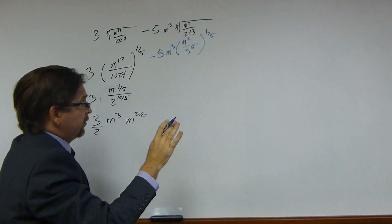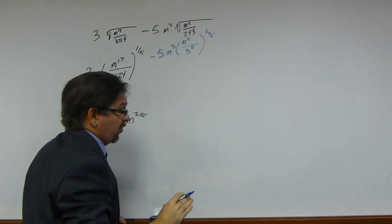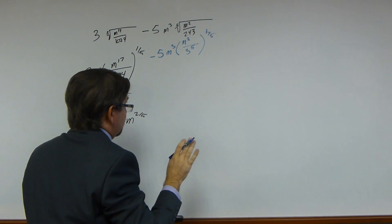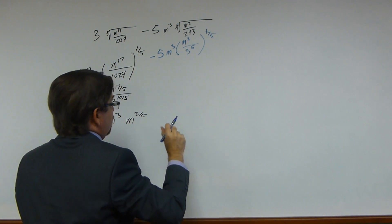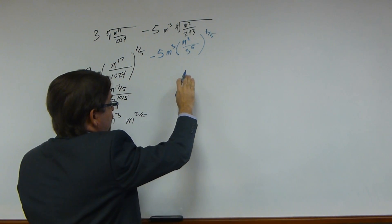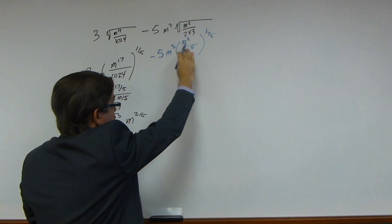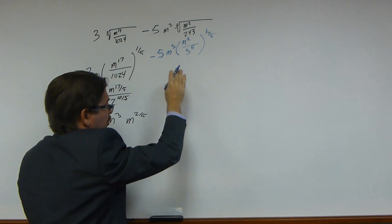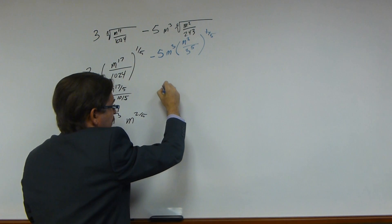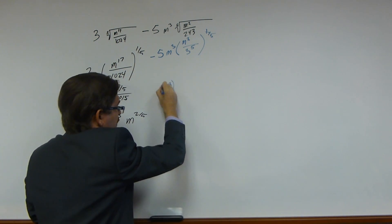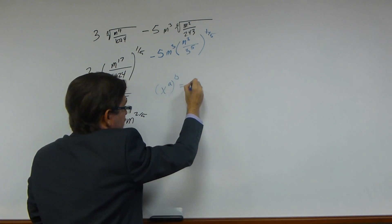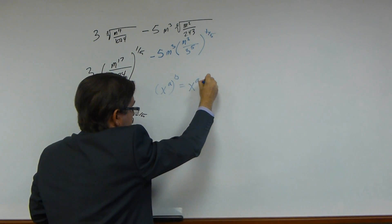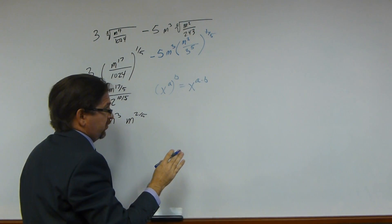Sorry, I got ahead of myself a little bit. Just a fair second. If I'm not careful, I'll go through problems too fast. Tell me if I'm going too fast. Okay, so we have, let's multiply our fractions, our exponents. Remember the exponent rule. The exponent rule is if you have x to the a, b, that's really the same thing as x to the a times b. So that's the rule I'm using.